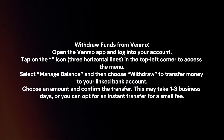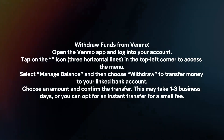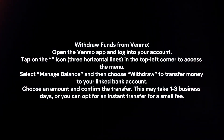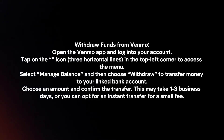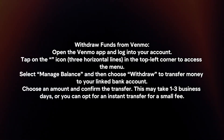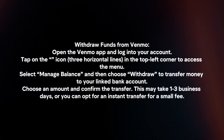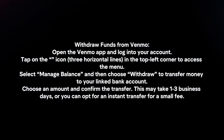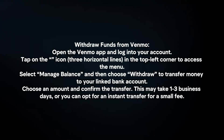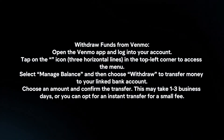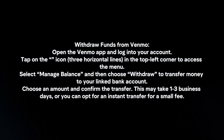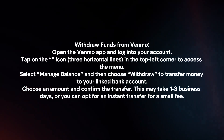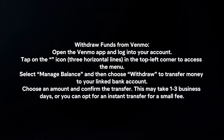Withdraw funds from Venmo. Open the Venmo app and login to your account. Tap on the three lines icon in the top left corner to access the menu. Select Manage Balance and then choose Withdraw to transfer money to your linked bank account. Choose an amount and confirm the transfer. This may take one to three business days, or you can opt for an instant transfer for a small fee.